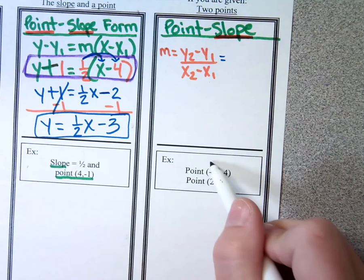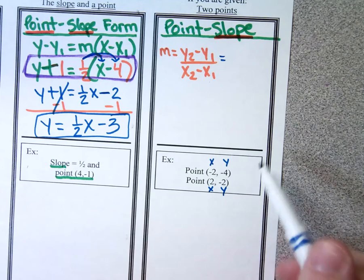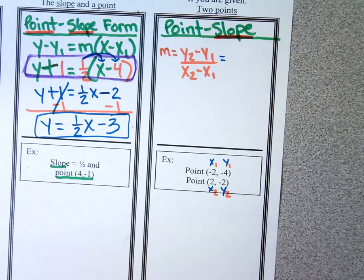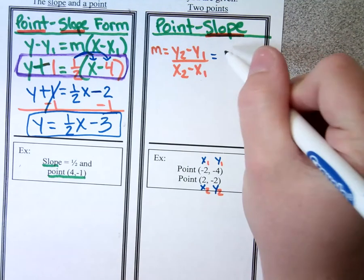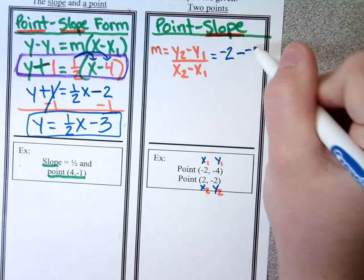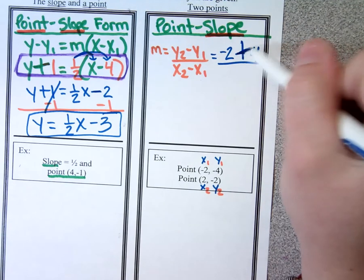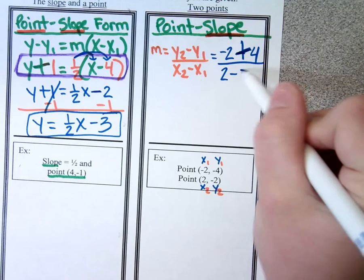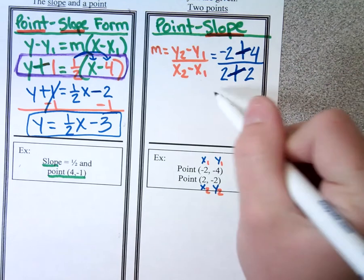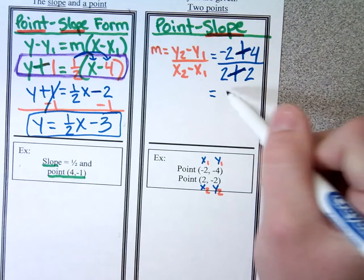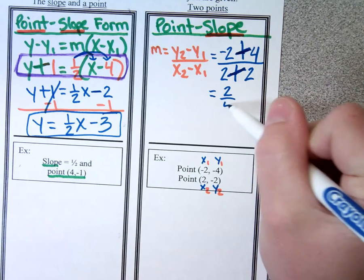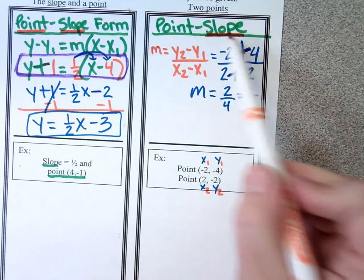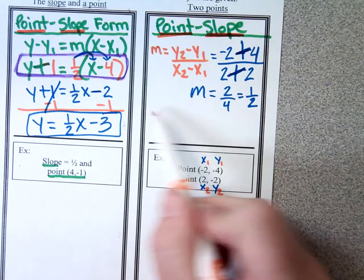The formula is y2 minus y1 over x2 minus x1. The first point is x1, y1 and the second is x2, y2. So y2 minus y1 is negative two minus negative four — the minus a negative makes a plus. x2 minus x1 is two minus negative two — also becomes a plus. Negative two plus four is two; two plus two is four. Reduced, that gives me one half. So the slope of my line is one half. Now that I have the slope and the points, I'm ready for point-slope form.